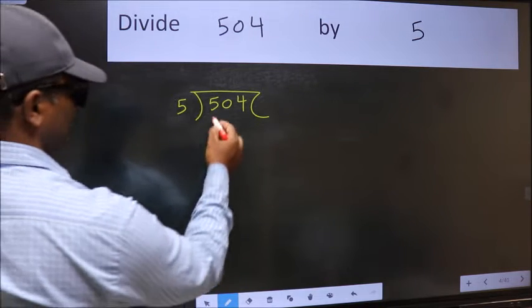504 and 5 here. This is your step 1. Next, here we have 5, here also 5. When do we get 5 in 5 table? 5 once 5.